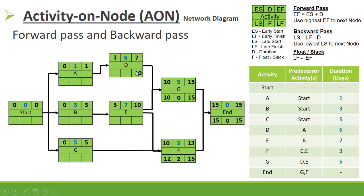For D: late finish = 10, float = 10 - 7 = 3, late start = 10 - 6 = 4. For E, the incoming late starts are 10 (from G) and 12 (from F). In the backward pass we use the lowest, which is 10: float = 10 - 10 = 0, late start = 10 - 7 = 3.